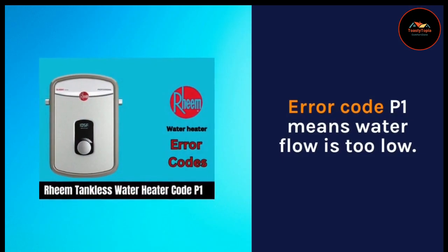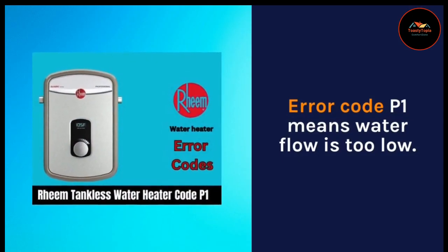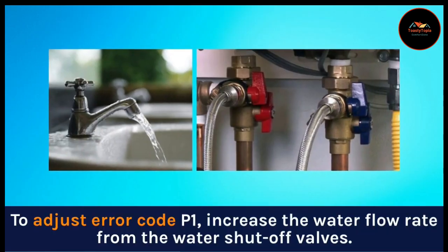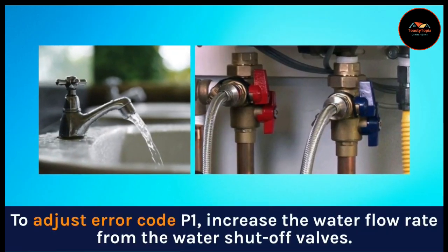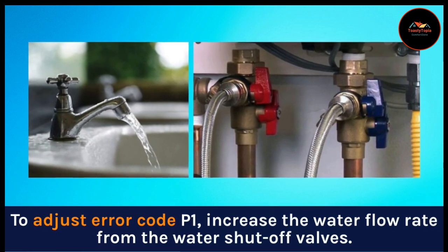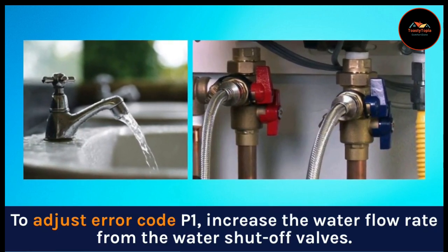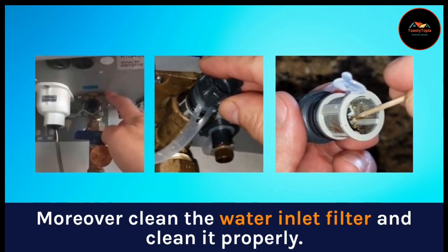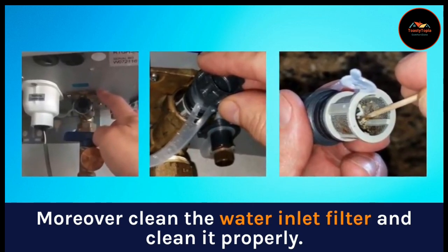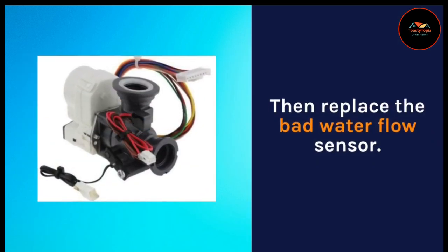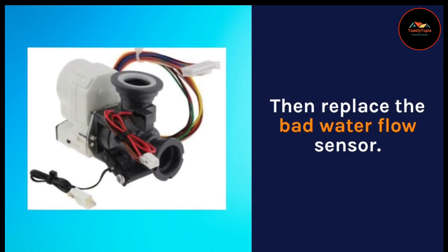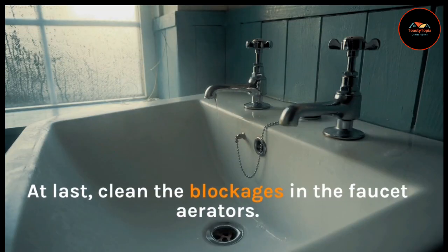Error code P1 means water flow is too low. To fix error code P1, increase the water flow rate from the water shutoff valves. Clean the water inlet filter properly. Then replace the bad water flow sensor, and clean any blockages in the faucet aerators.